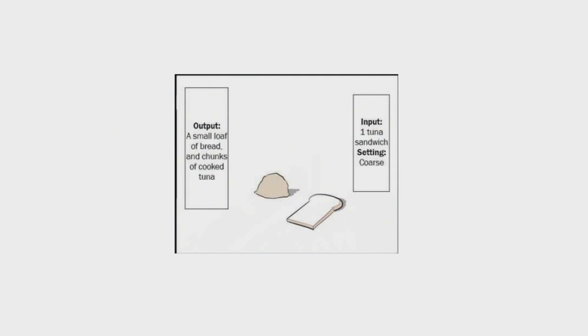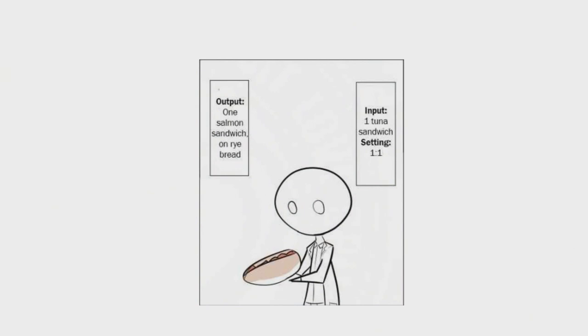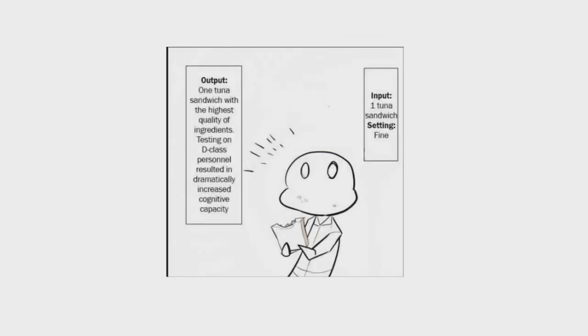Input: one tuna sandwich. Setting: coarse. Output: a small loaf of bread and chunks of cooked tuna. Input: one tuna sandwich. Setting: one-to-one. Output: one salmon sandwich on rye bread. Quite delicious.